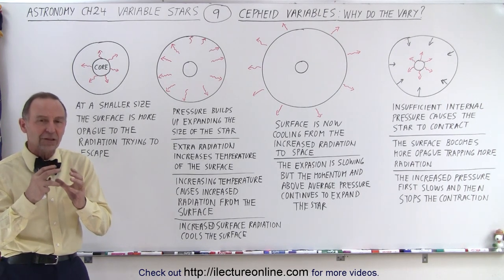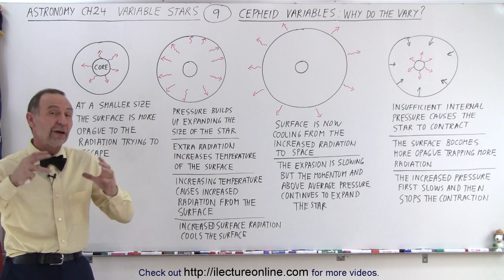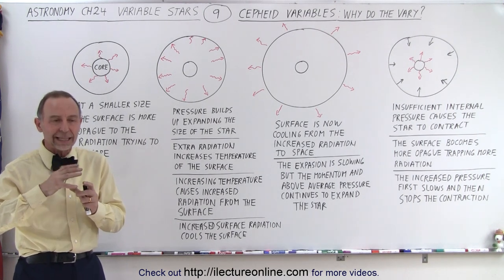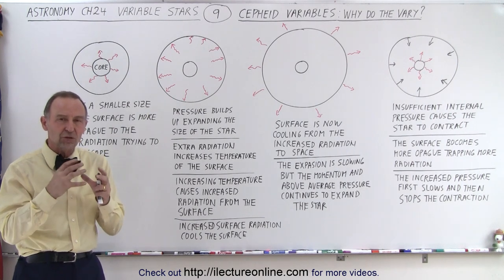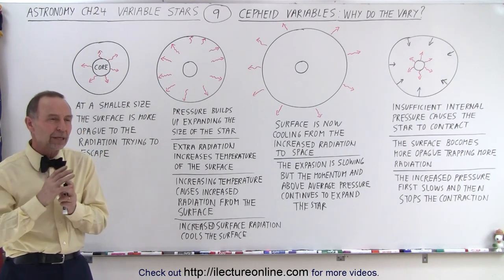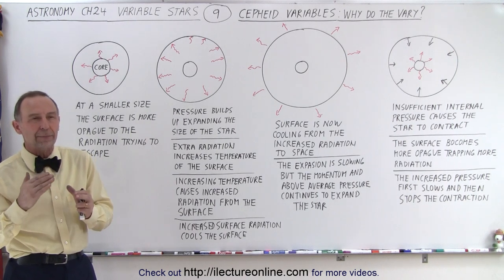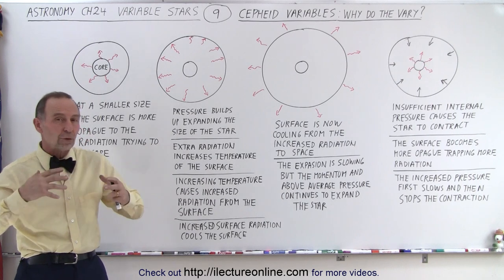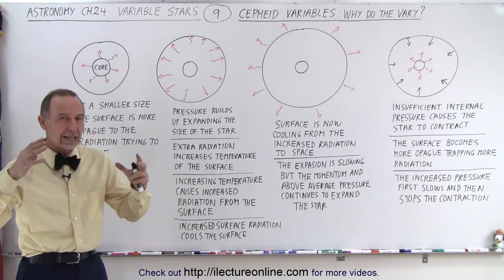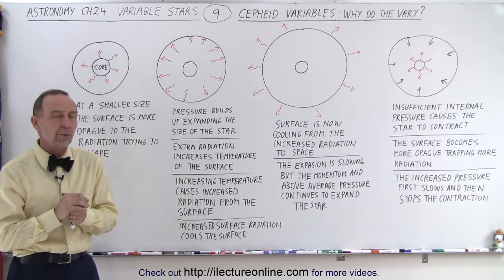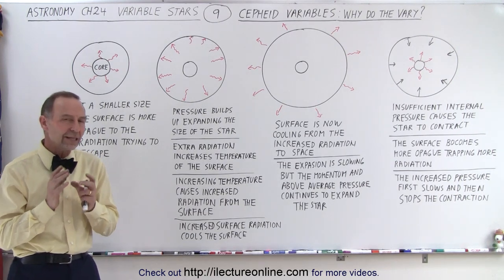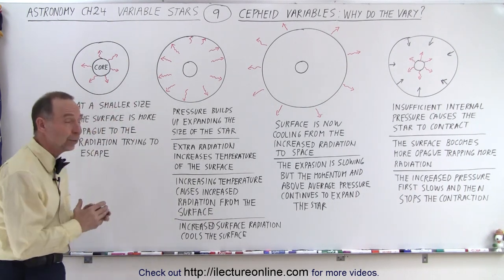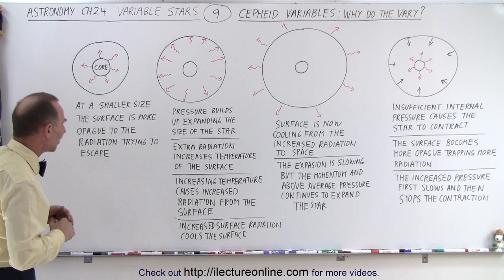Is it because the amount of radiation being emitted from the core varies in that particular fashion? That is unlikely. It's unlikely that the core emission of energy varies in that particular way — it would be caused by perhaps running out of available materials, the core collapsing, and then the extra heat restarting the fusion process. We don't think that's the case. We think it has more to do with the surface itself, so let's explain what we think is happening in these Cepheid variables.